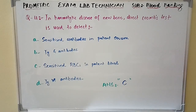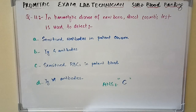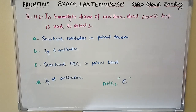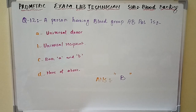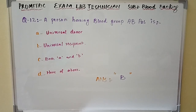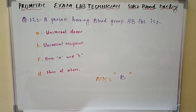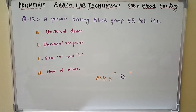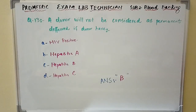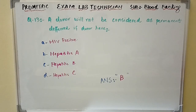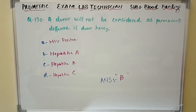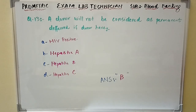Question number twelve: A person having blood group AB positive is — the answer is Option B: universal recipient. Question number thirteen: A donor will not be considered as permanently deferred if the donor has — the answer is Option B: hepatitis A.